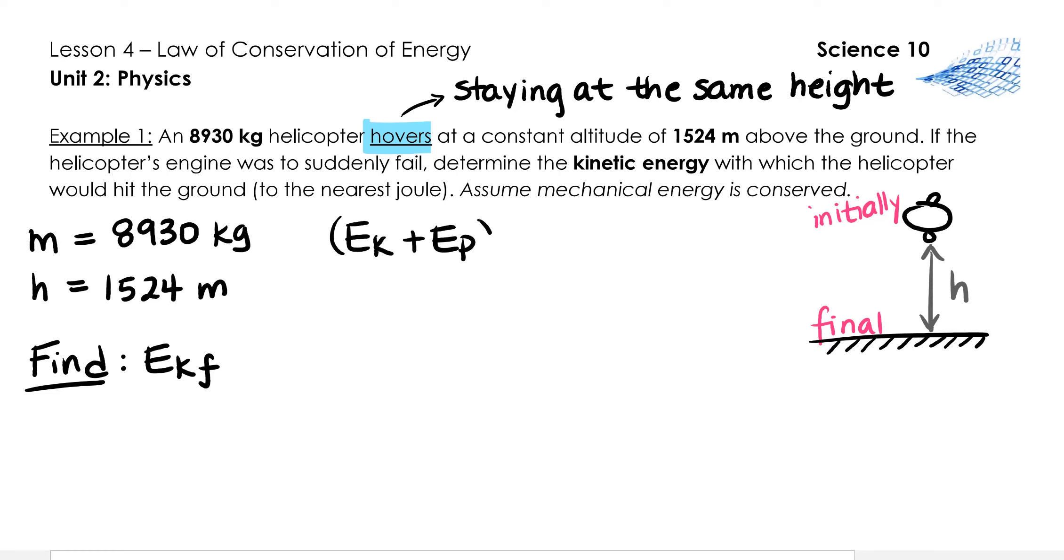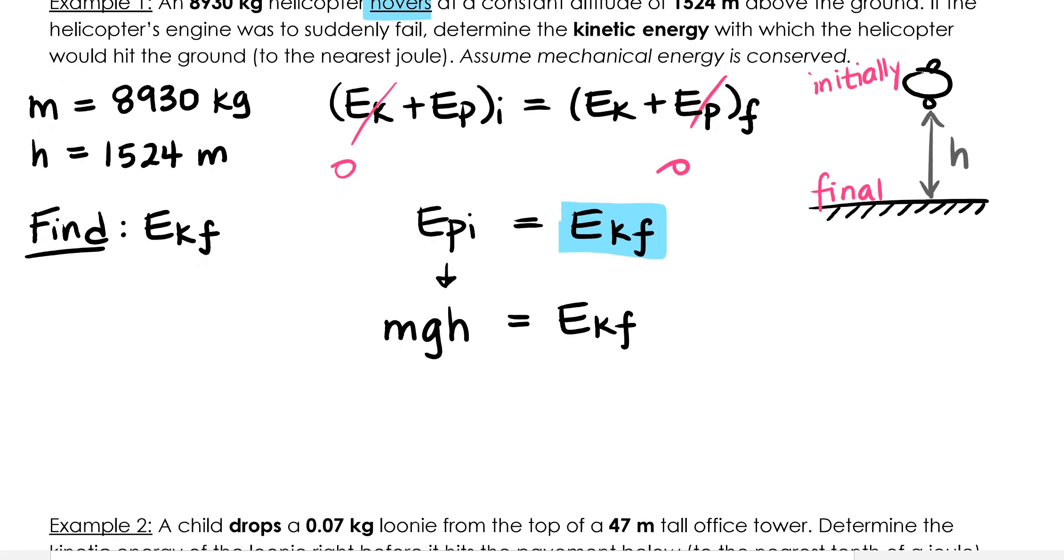Here's our formula. Initial kinetic plus potential energy equals final kinetic plus potential energy. The next step is to figure out which of these quantities is zero. If the helicopter is hovering perfectly right before its engine fails, it has no kinetic energy, so EK initial is zero. Right before it hits the ground, there's basically no space left between the helicopter and the ground, so the gravitational potential energy is zero. This leaves us with EP initial equals EK final. We are looking for EK final, so we are not going to replace it with its formula one half mv squared. Don't do that. We need to find it so we don't replace it. We do, however, replace EP initial, or MGH. Now we have MGH equals EKF. We don't have to do any other algebra for this problem because the thing we're looking for is already isolated. Go ahead and substitute in your values.